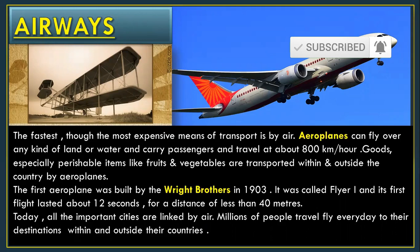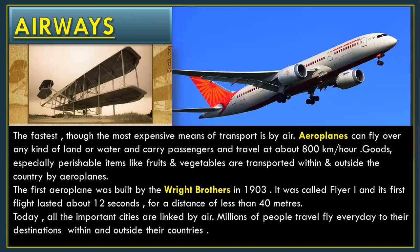Specially perishable items — perishable items means jaldi kharaab hone wale items — like fruits and vegetables are transported within and outside the country by aeroplanes. The first aeroplane was built by the Wright brothers in 1903. It was called Flyer First, and its first flight lasted about 12 seconds for a distance of less than 40 metres.